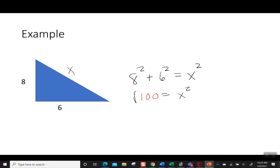Now to get the value for x, we have to take the square root of the 100 and the square root of our x squared, so that's going to tell us what x is equal to. So let's head back to the calculator.